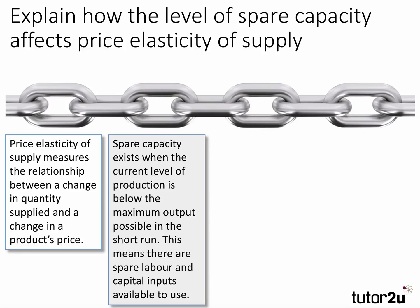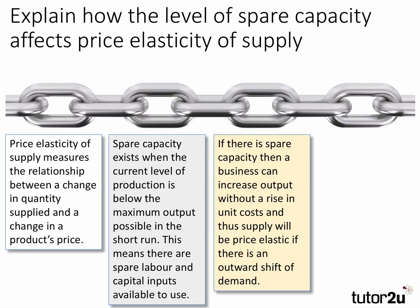We've defined our terms, so now we reason the link between spare capacity and elasticity of supply. If there is spare capacity, then the business can increase output without a rise in unit costs, and thus supply will be price elastic if there is an outward shift of demand.